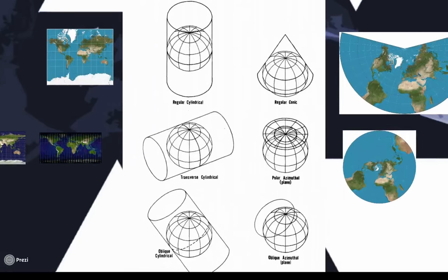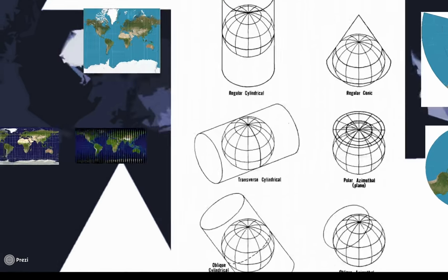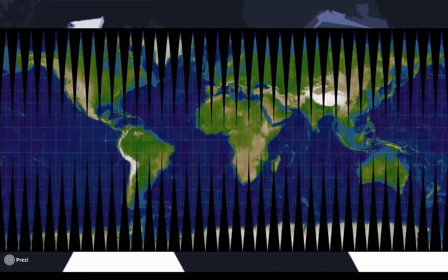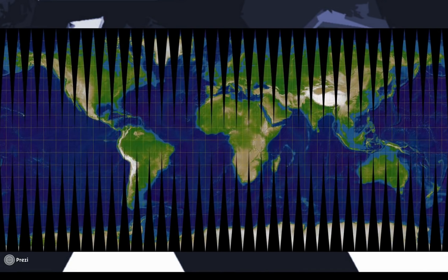Transverse tells us that instead of placing the cylinder from the top to the bottom so that the equator is touching the cylinder, it's placed on the side so that a meridian of the globe touches the cylinder rather than the equator. This is a key feature of this system and a good reason to use a transverse projection because scale is true along the meridian that touches the cylinder.